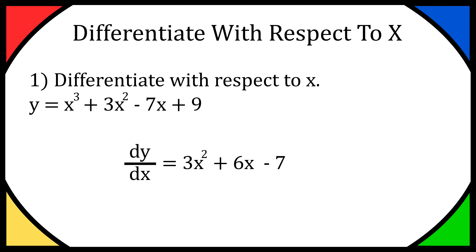And as for the plus 9, constants will disappear. That would be because we effectively have 9 times x to the power of 0, because it's 9 times 1. So when you multiply the front by 0, it will all disappear. Does that make sense? If not, let me know down below.